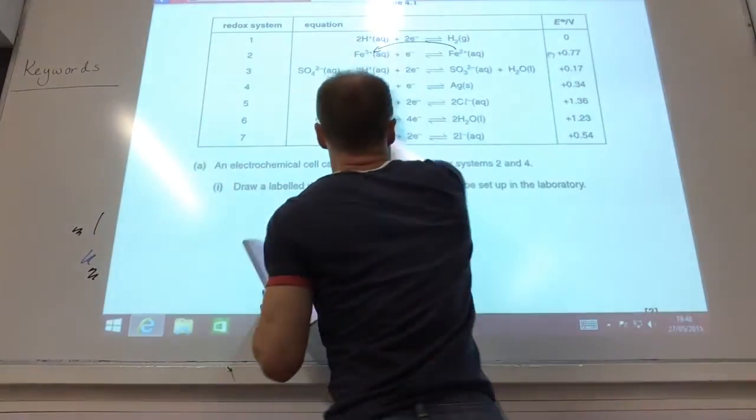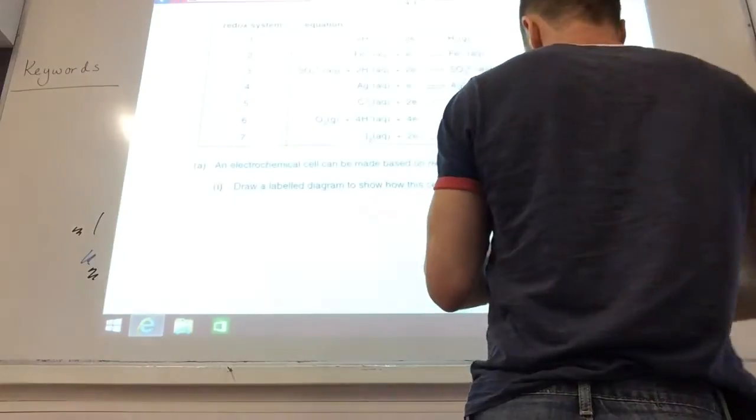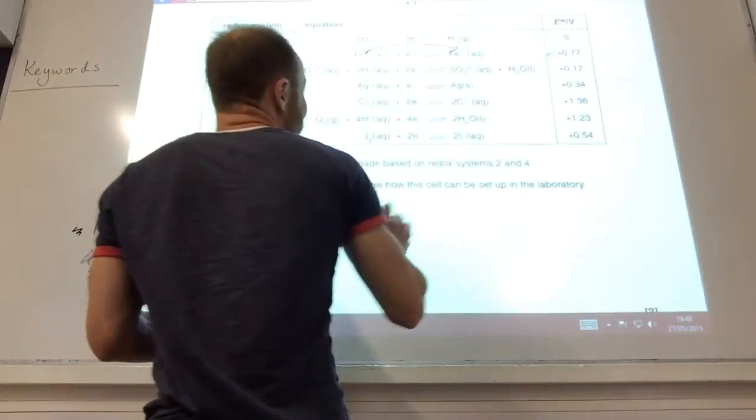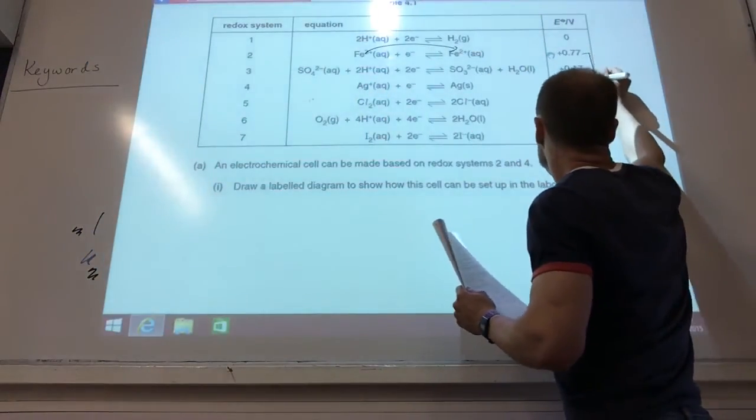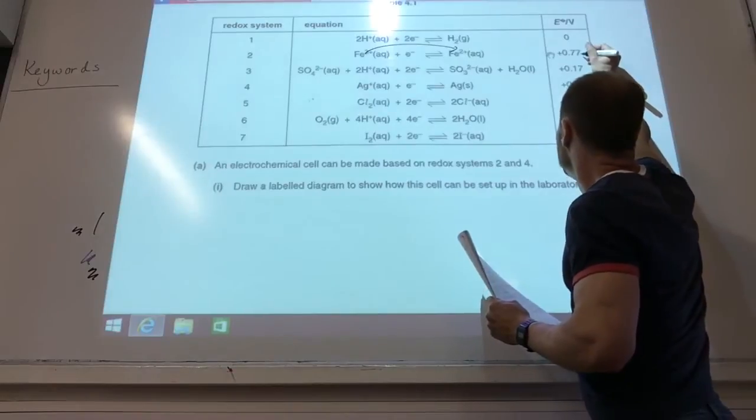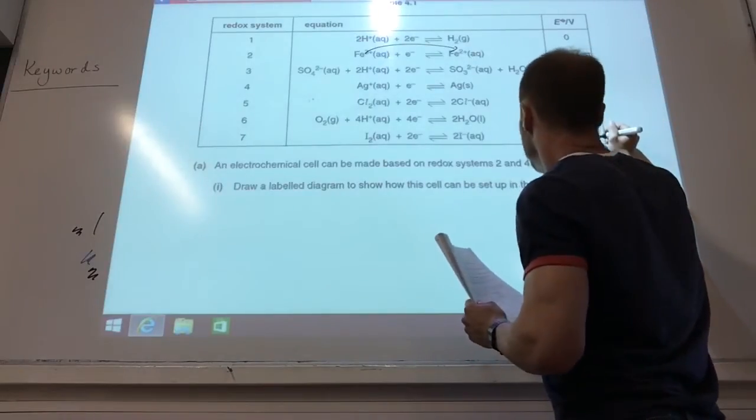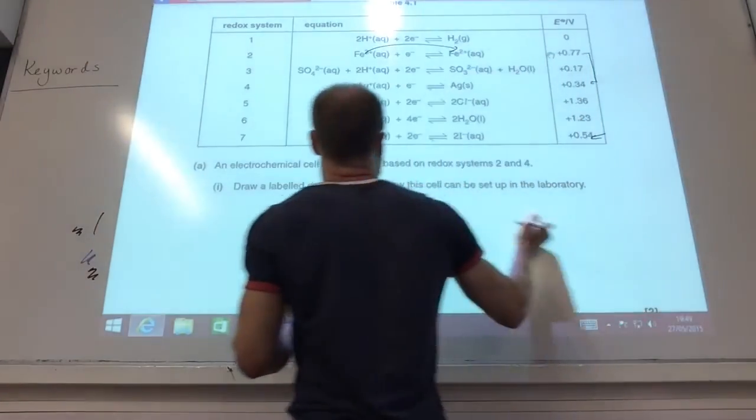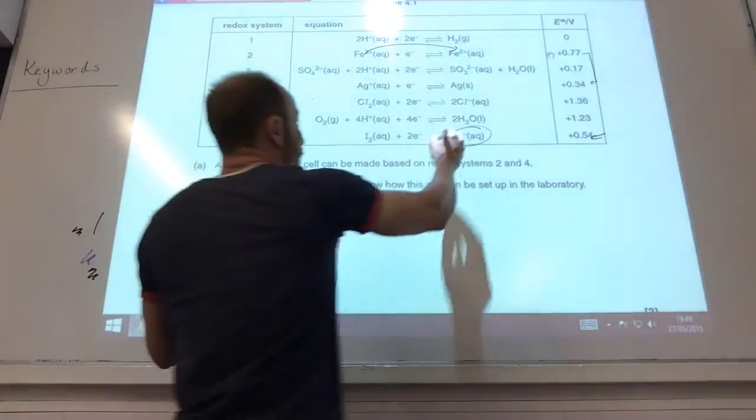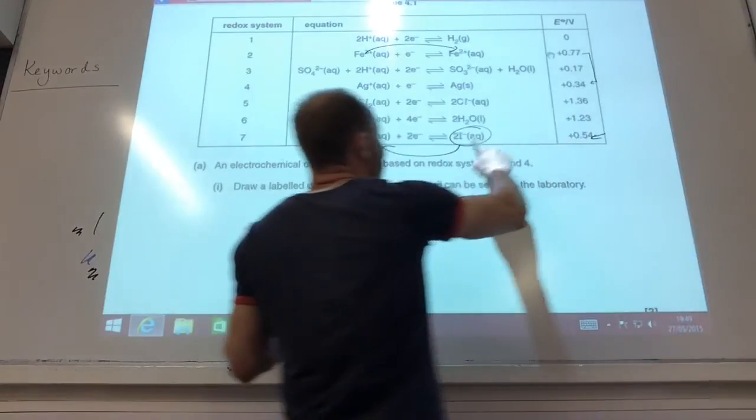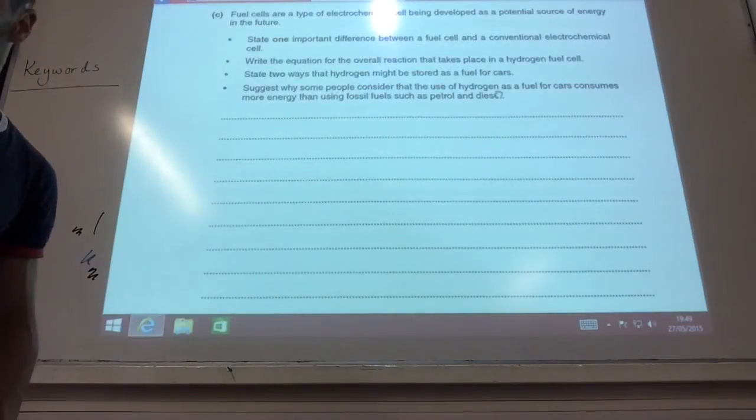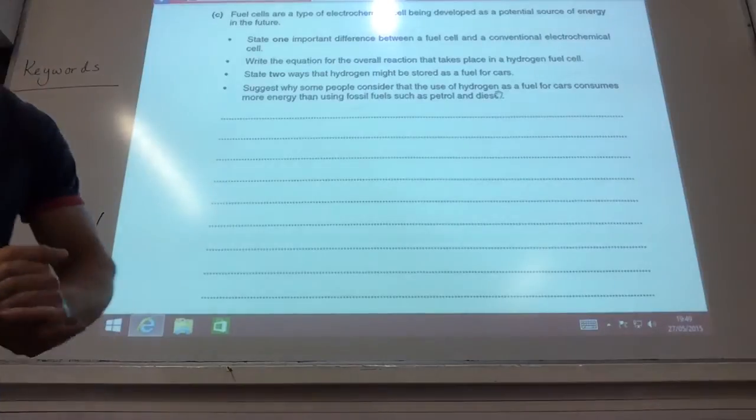And then the next one is I need a species that will reduce Fe3+ to Fe2+, but will not reduce Ag+. So I need something in the middle of those two. So something between 0.34 and 0.77. So the one it's going to be is iodine here. So if that goes that way, it's going to be the iodide ion which will do it, because that one is more negative, so it will get reversed. So it's the iodide ion. Oh right, a bit of a wordy one now, but we don't mind that, do we? Five marks in the bag.